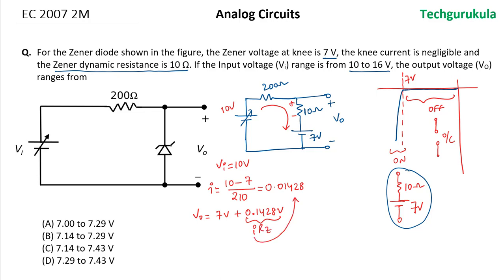Now let's understand what happens when Vi is equal to 16 volts. In that case, the current will be equal to 16 minus 7 over 210 ohms. This will be equal to 0.04286 amperes.